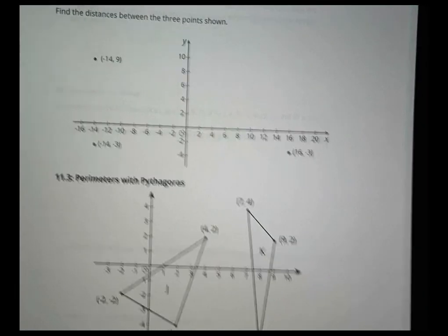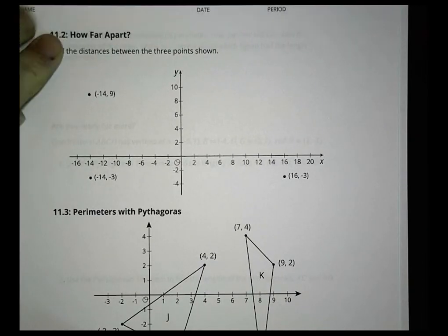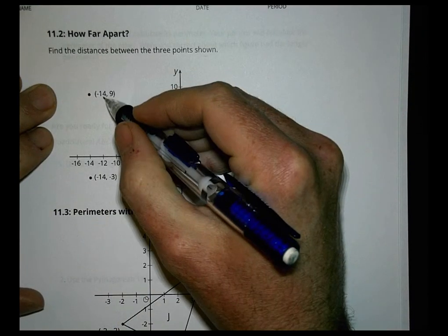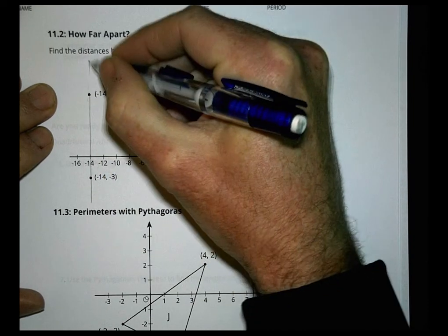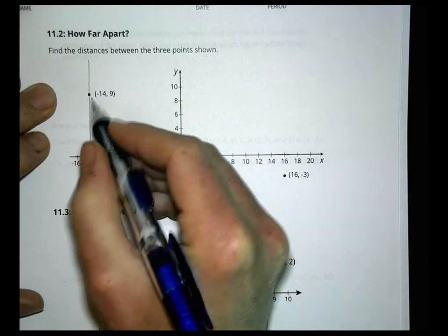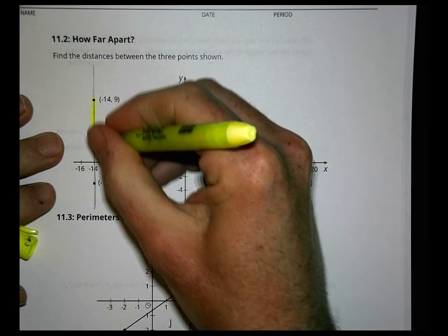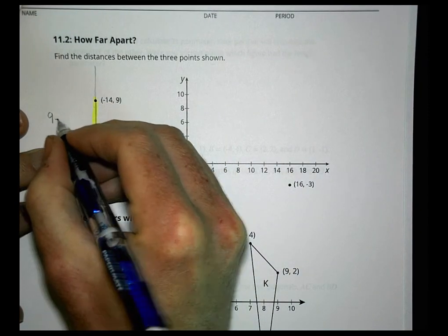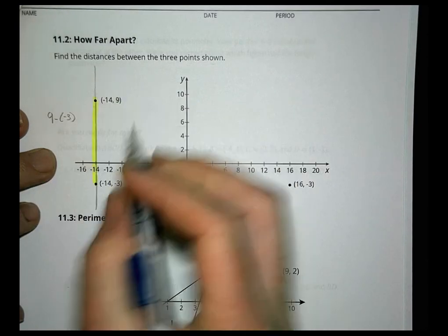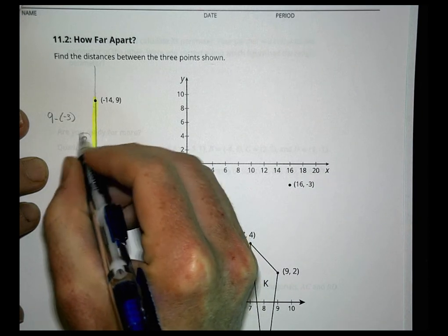The next activity is called 'How Far Apart.' Find the distances between the three points shown. For the first pair, they share the same x-value, so we're on the same vertical line. The distance is based on the y-values: 9 to negative 3. We do 9 minus negative 3, which equals 12.